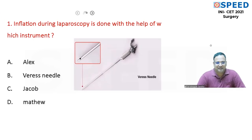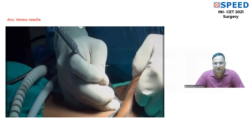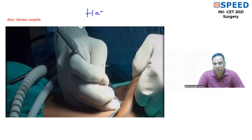The first question reads: Inflation during laparoscopy is done with the help of which instrument? It is a simple and straightforward question. The answer is the Veress needle. There are two techniques to create a pneumoperitoneum before laparoscopy: closed technique and open technique. The Veress needle technique is a closed technique. When you use an open technique, the cannula used is called Hassan's cannula.